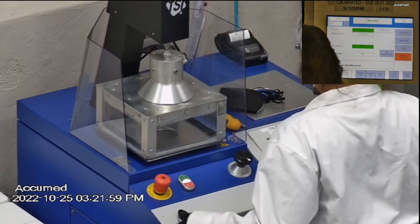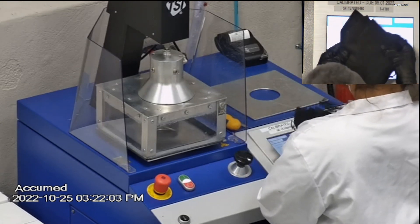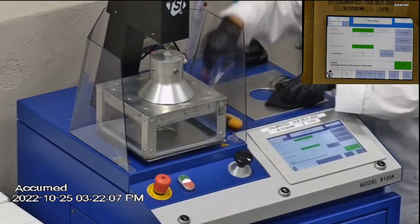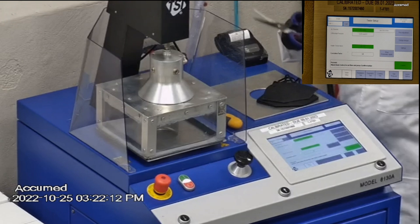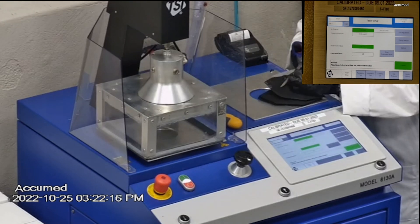Now we're gonna run them through our TSI machine. This is our TSI machine model 8130A which is also the same filtration testing machine that NIOSH uses to approve N95 respirators.